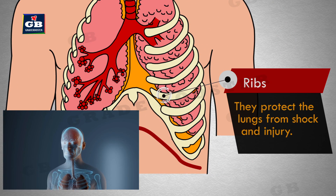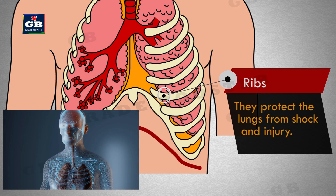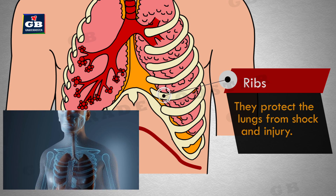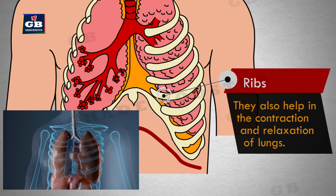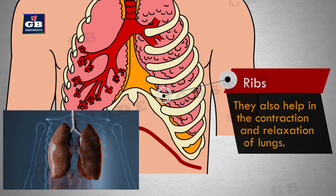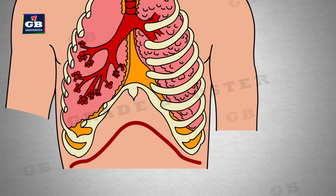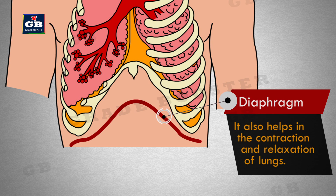Ribs: they protect the lungs from shock and injury, and also help in the contraction and relaxation of lungs. Diaphragm: it also helps in the contraction and relaxation of lungs.